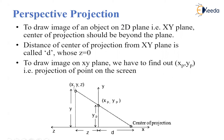The dimensions will get changed when we take the projection onto the view plane. We have to find the new coordinates of the object — we call them XP and YP — which are the coordinates of the projected image on the view plane.